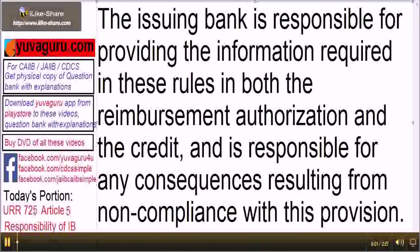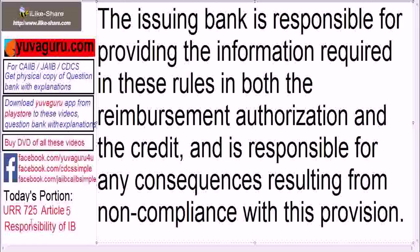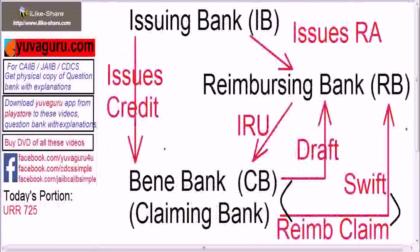Let's study Article 5 of URR 725 — responsibility of the Issuing Bank. The issuing bank is responsible for providing the information required in these rules in both the reimbursement authorization and the credit, and is responsible for any consequence resulting from non-compliance with this provision. It means the issuing bank issues the credit as well as it issues the RA.